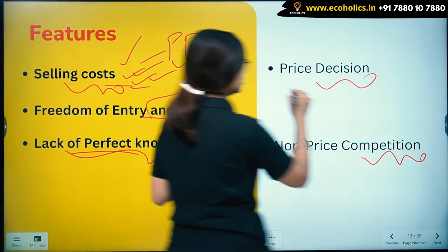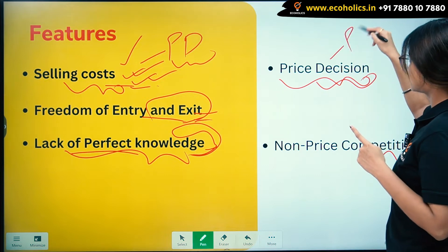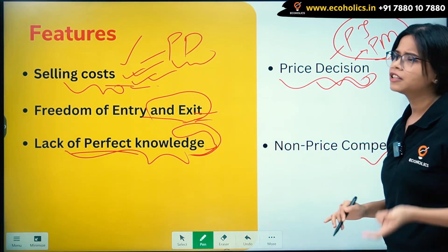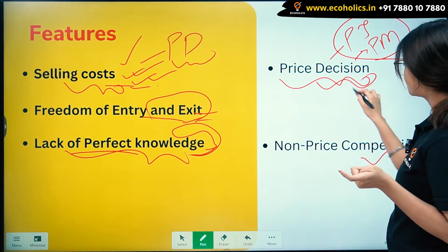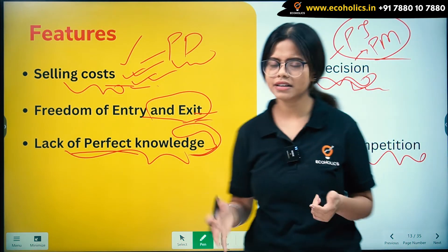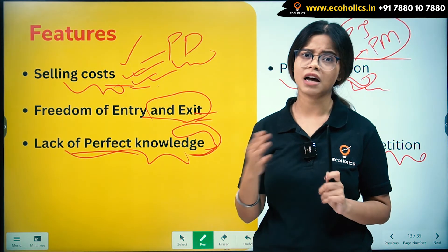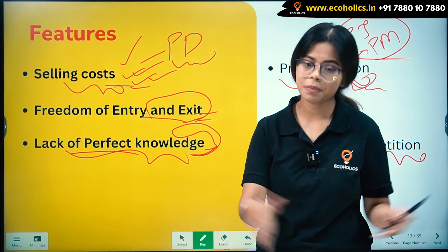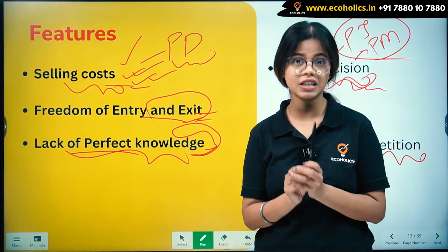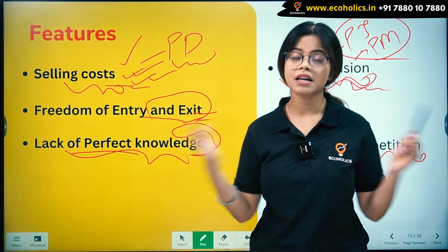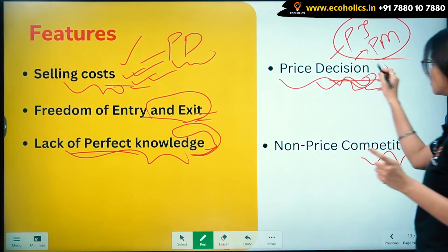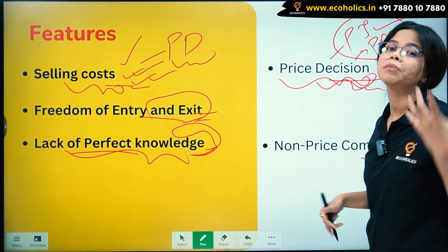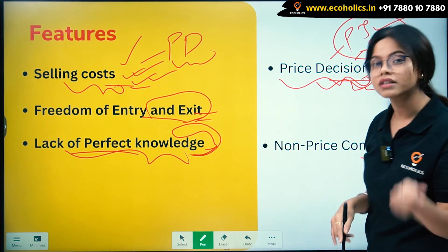Price decision is another feature. The firm is neither a price taker nor a price maker — it solely depends on the buyers. If consumers are loyal to a brand, even if it is more expensive, that brand can set the price it prefers. The firm's pricing power depends on the product and the loyalty of buyers towards that product.